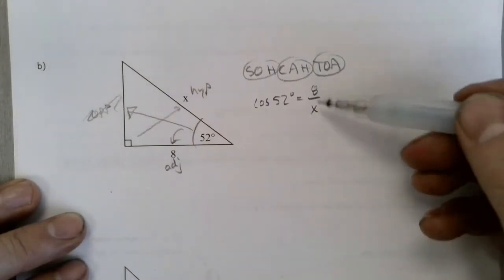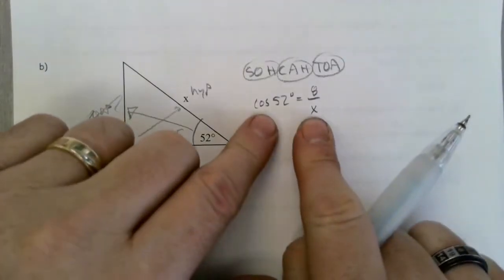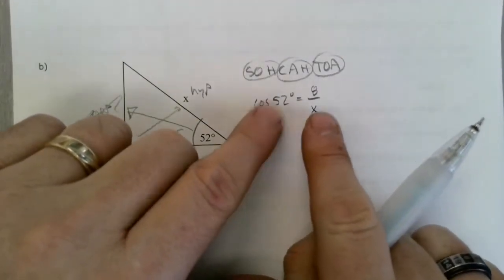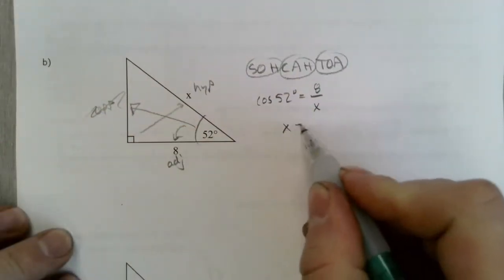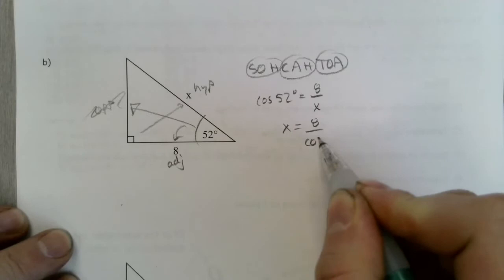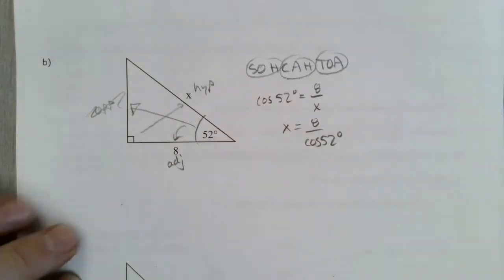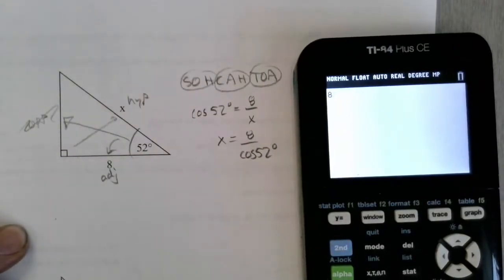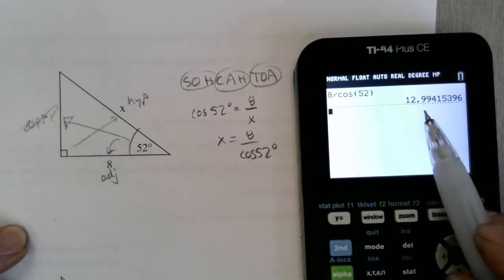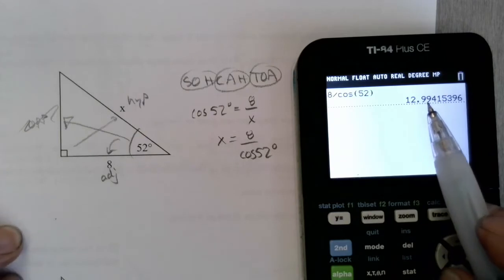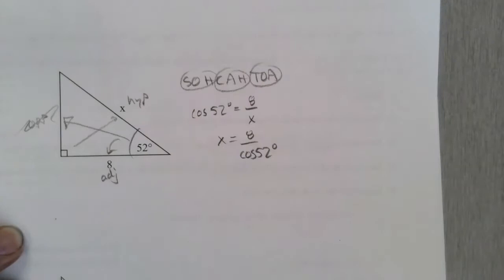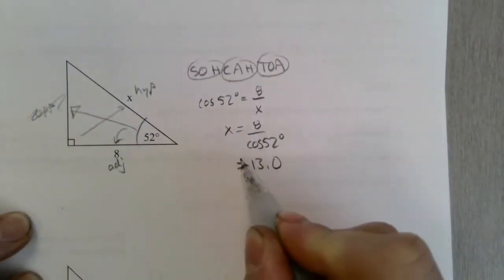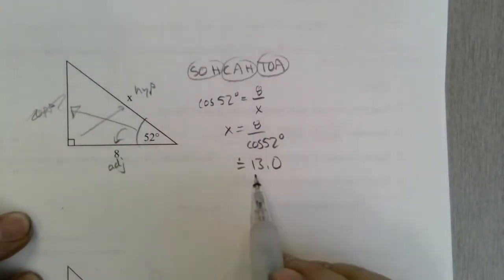Since the unknown is in the denominator, I can swap those two. So X equals 8 divided by the cosine of 52 degrees. Evaluating: 8 divided by cosine of 52, rounded to the nearest tenth, is approximately 13.0.